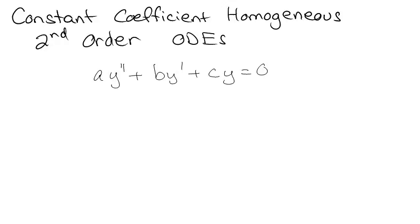In this video, we're going to look at constant coefficient homogeneous second-order ODEs. By constant coefficient, these are like constants — they're not functions. They're actual numbers like 5, or square root of 3 over 5, or 1 over e to the pi, or whatever. So they're actual numbers, but not functions, so they can't have any x's or y's in them.